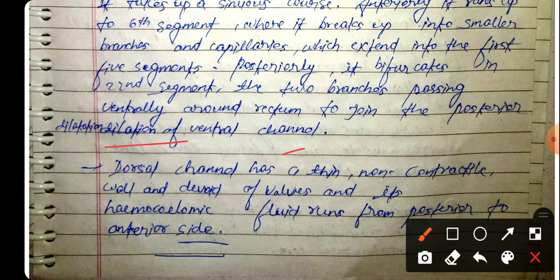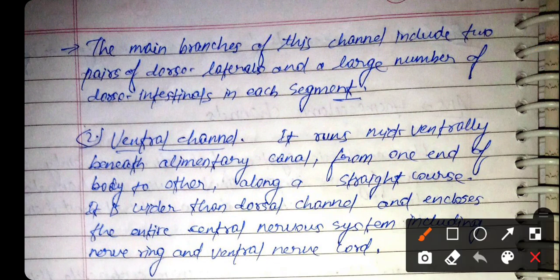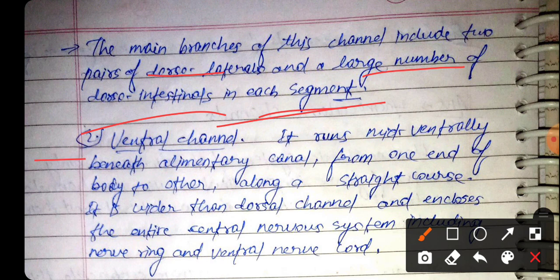The dorsal channel has a thin non-contractile wall devoid of valves, and its haemocoelic fluid runs from posterior to anterior side. The main branches of this channel include two pairs of dorso-lateral branches and a large number of dorso-intestinal branches in each segment.